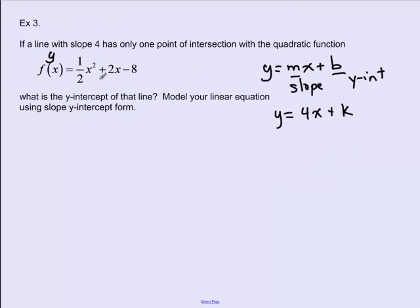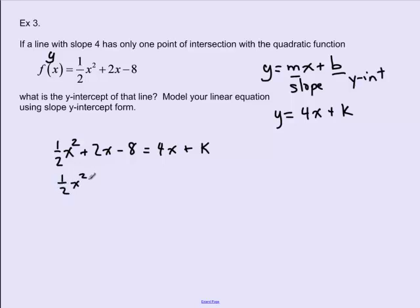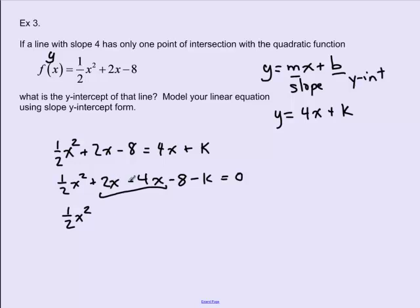Just like before, we set the two equations equal to find points of intersection. So one-half x squared plus 2x minus 8 equals 4x plus k. Moving everything to the left-hand side: one-half x squared, then 2x minus 4x gives negative 2x, then negative 8, and k moves over to become negative k. So we have one-half x squared minus 2x minus 8 minus k equals 0.